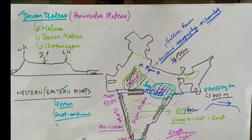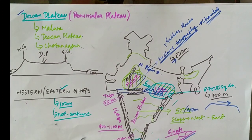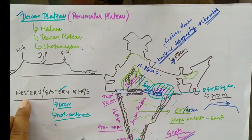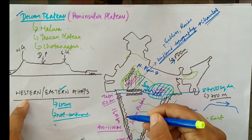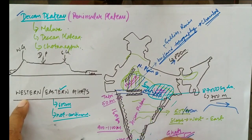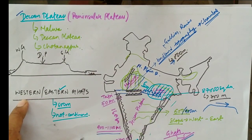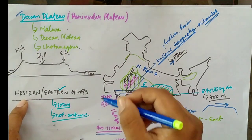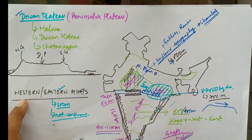Another physiographic division of our country is the Western and Eastern Ghats. They are known as 'ghats' because towards the sea they look like a staircase. The Western Ghats extend from River Tapi towards the south up to Kanyakumari, with a height of 900 to 1100 meters. The Western Ghats form a continuous chain of mountains.